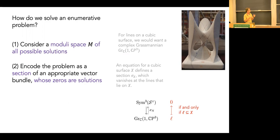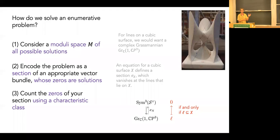If I have an equation for a cubic surface, it gives me a section of the third symmetric power of the dual tautological bundle on the Grassmannian. Basically, you take a line downstairs and plug it into the equation for the cubic surface; that line gets mapped to zero in the fiber if and only if the line lies on the cubic. So we've reduced everything to counting the zeros of a section of a bundle, which can be done topologically as a characteristic class computation.